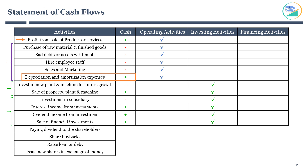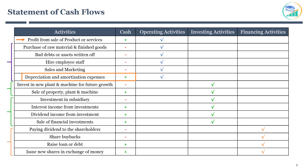The remaining activities are all related to financing activities. Paying dividends to shareholders or share buybacks reduces the company's cash, so they are shown as negative cash flow. Raising debt or issuing new equity shares will bring more cash into the company. I hope you now feel comfortable classifying different business activities as operating, investing, and financing.